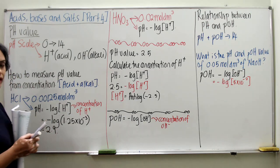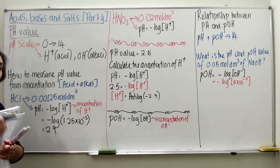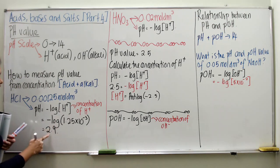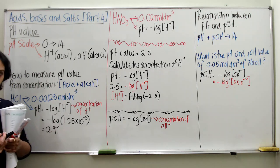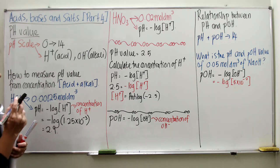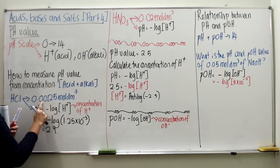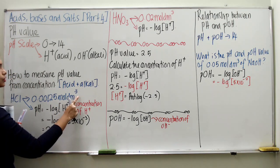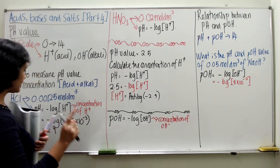Since the pH value of acid ranges from 0 to 7, a result of 2.9 confirms this is indeed an acid — and 2.9 is considered a strong acid. To recap: the concentration given is 0.00125 mol per dm³. Using the formula pH = negative log of the hydrogen ion concentration, you change it into indices form, press your calculator, and you get 2.9.